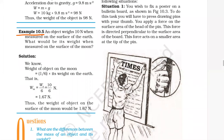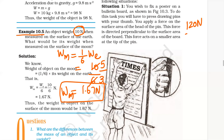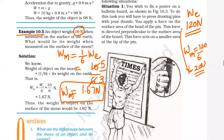An object weighs 10 newton when measured on the surface of earth. What would be its weight when measured on the surface of the moon? Weight of an object on the surface of the moon is 1/6 the weight on earth, so this will be 10 divided by 6, which equals 5/3, that is 1.67 Newton. Weight on moon will be 1.67 Newton.